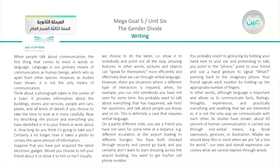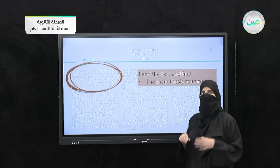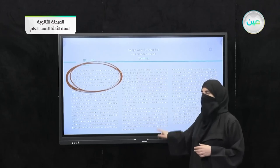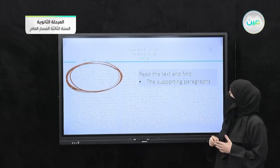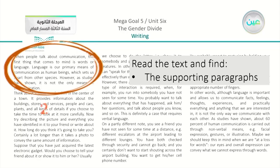We have the complete passage here. The main thesis statement will be at the very beginning — this is the introduction. Then we have another instruction to find the supporting paragraphs. In your book you can find paragraphs two, three, four, five, and six. So we have the introduction and five paragraphs to support the idea.